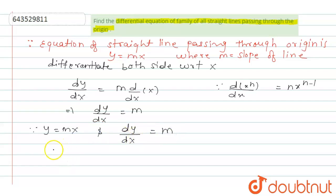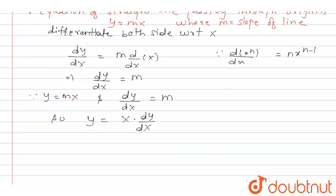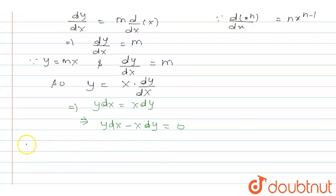So we can write it as y equals to x times dy by dx. So we can write it as y dx minus x dy equals to 0 here.